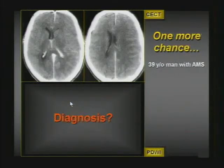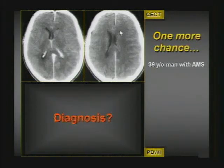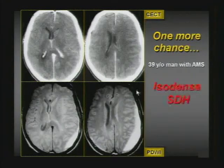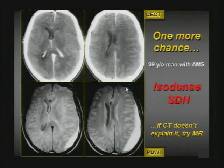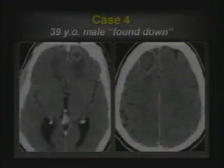One more chance on this diagnosis. A patient with altered mental status — the left lateral ventricle appears slightly effaced but nothing is definitive even with contrast. So you do the MR, and clearly the extra-axial collection presents itself. If the CT doesn't make the diagnosis and there's a neurological event, go on to MR.